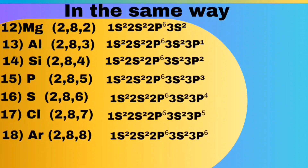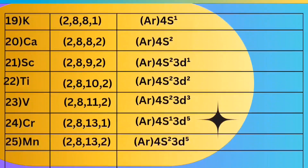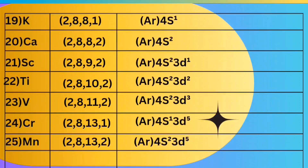In the same way, in magnesium — first shell two electrons, second shell eight electrons, third shell two electrons. You can learn all the elements' electronic configurations by observing this chart. Please comment on why the chromium and copper electronic configurations are star-marked. Thank you.